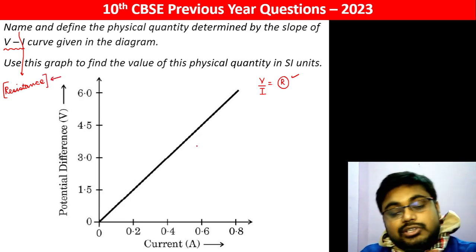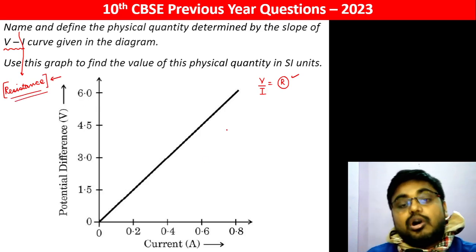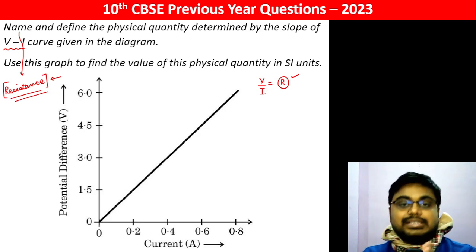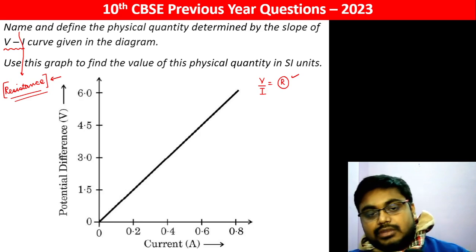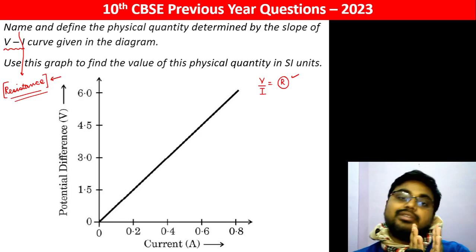The definition is that resistance is the obstruction which is offered to the flow of electrons when current is passing through the conductor and when potential difference is applied across its ends.